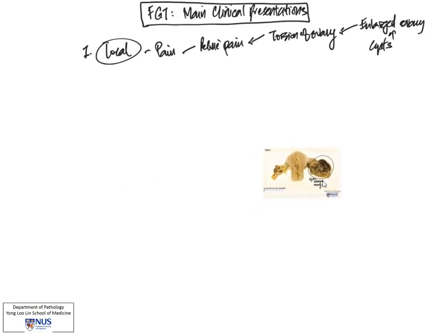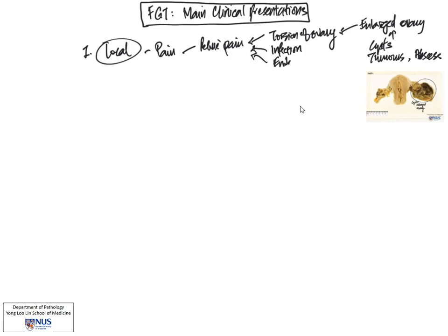Other conditions that can predispose to this would also be enlargement by tumors, for example. And sometimes even infection can give rise to enlargement, such as a tubal ovarian abscess. Other types of conditions that can cause pelvic pain include infections, for example, chronic pelvic pain in pelvic inflammatory disease and even conditions such as endometriosis.